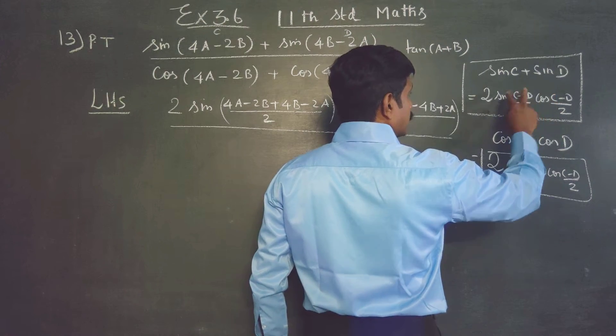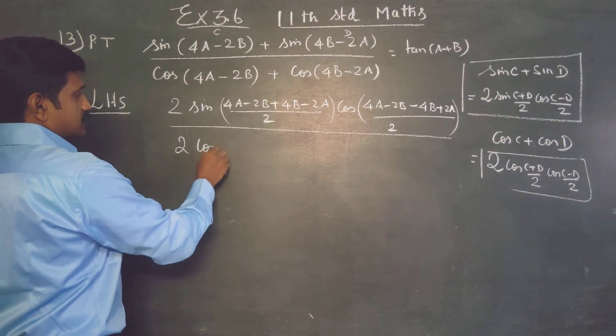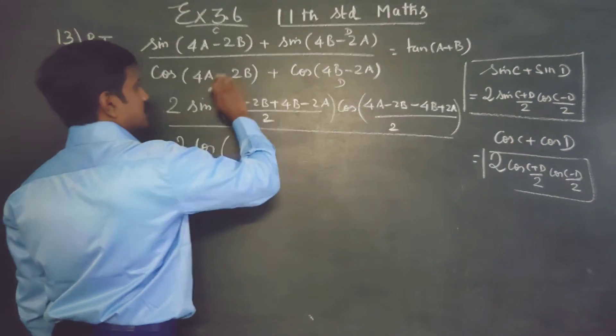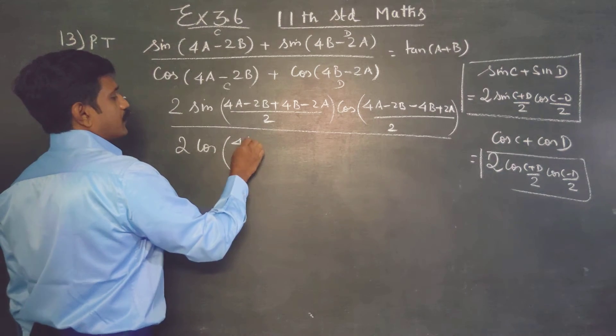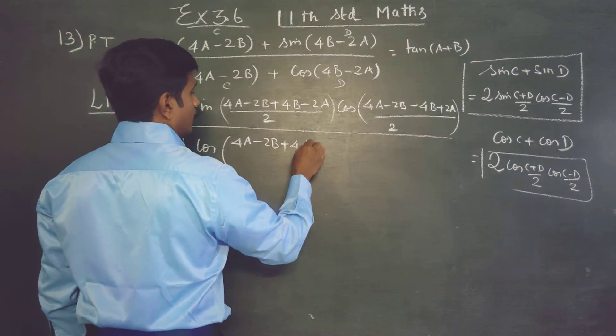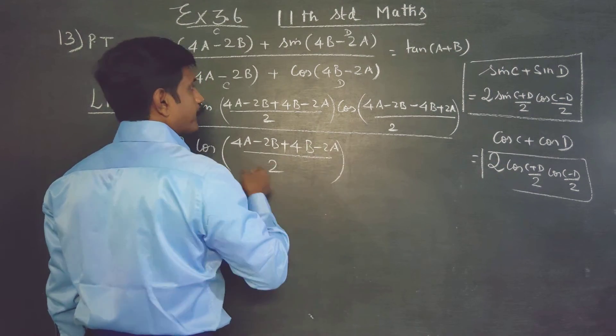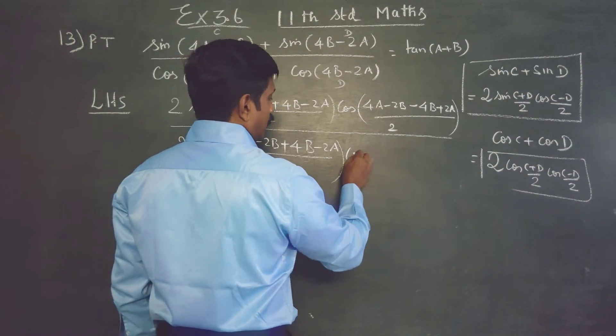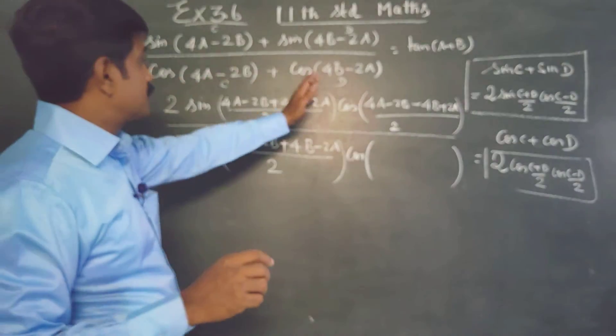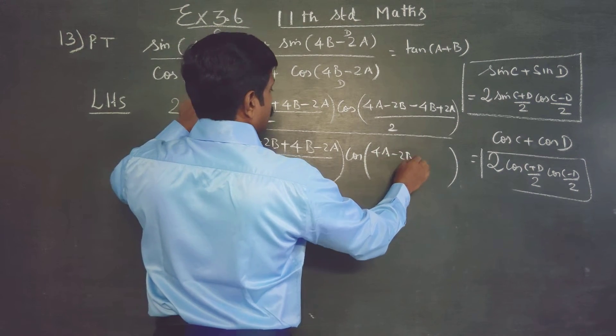This plus this: 4a minus 2b plus 4b minus 2a by 2, that is cos c minus d by 2. Then c is 4a minus 2b minus minus 4b, this minus is not plus 2a by 2.